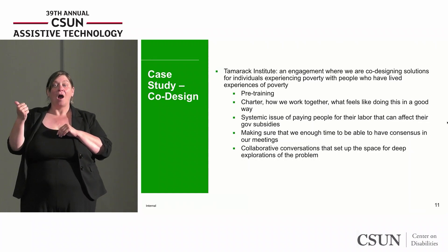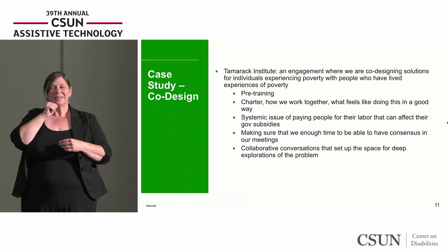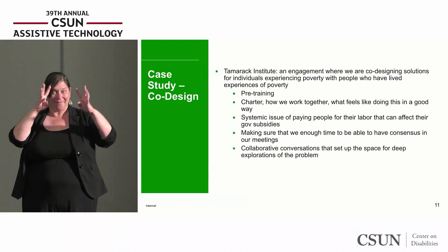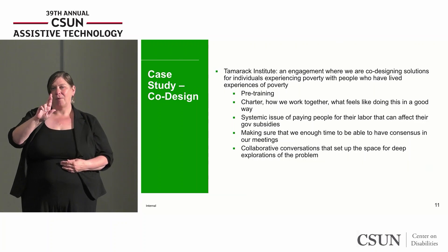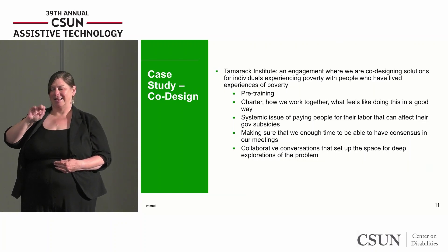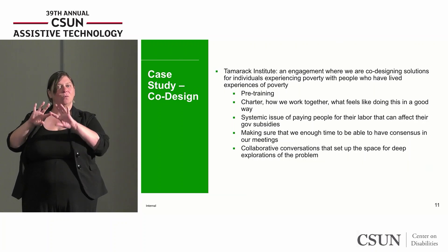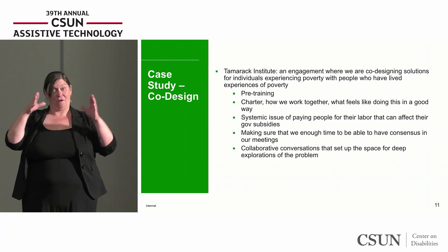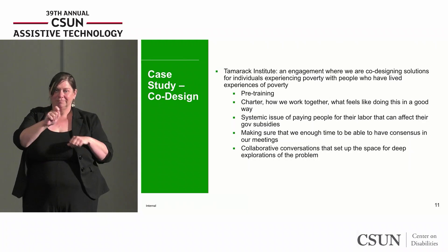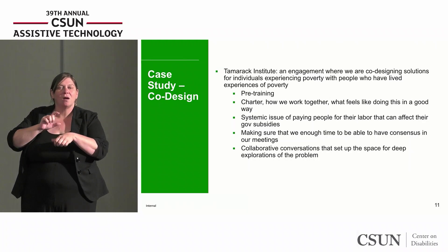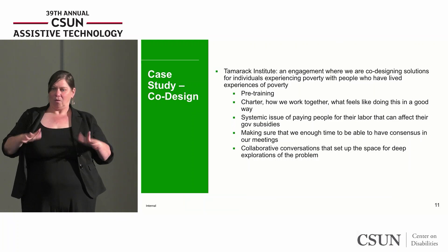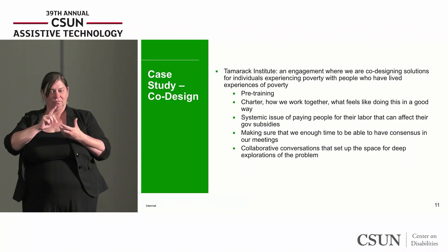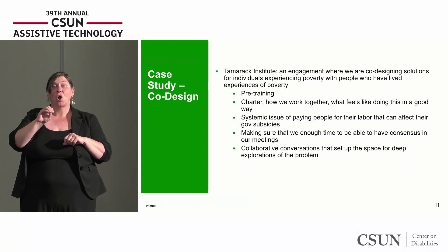We haven't done this with just one group — we're doing this work across all of our inclusive innovation efforts. The second case study is about the Tamarack Institute, an organization represented in Canada and the U.S. that focuses on eradicating poverty. With this particular group, we've actually created a working group with individuals with lived experiences of poverty to build banking solutions that address their needs. This is a really fantastic co-design model that we're utilizing.